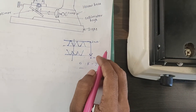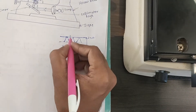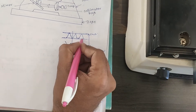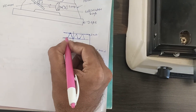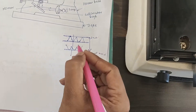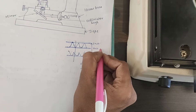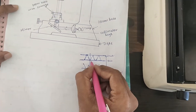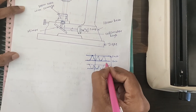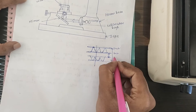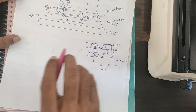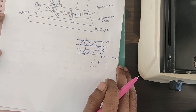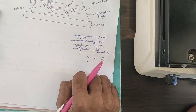Similarly, to find out the minor diameter of the thread, adjust the horizontal line to the top of the root of the thread. Take the initial reading. Then bring the line to the bottom of the root. That distance is the minor diameter. The difference between final minus initial gives the minor diameter of the thread.